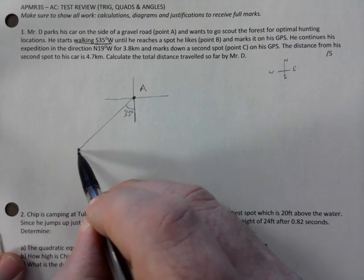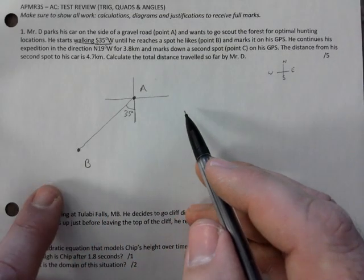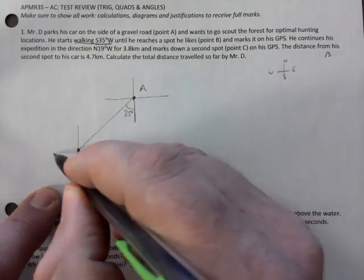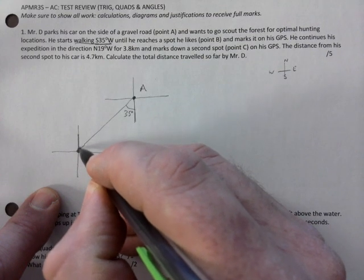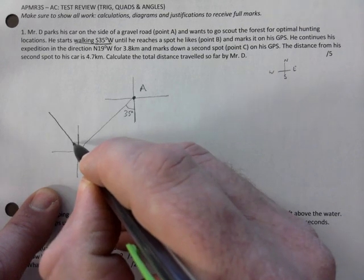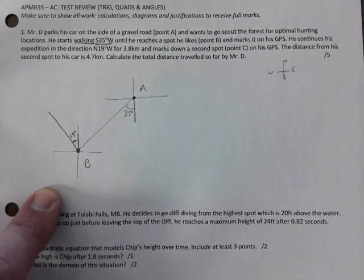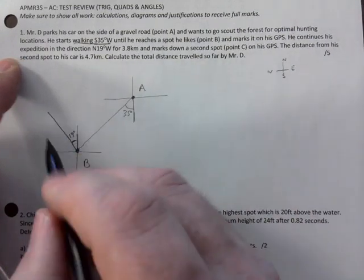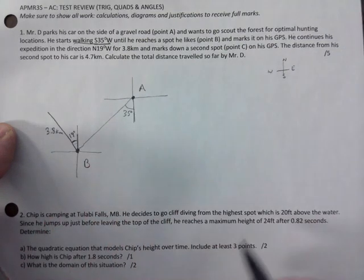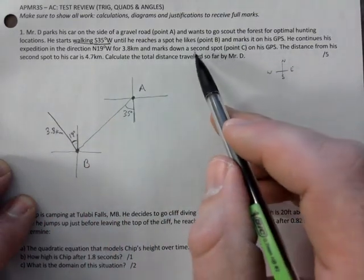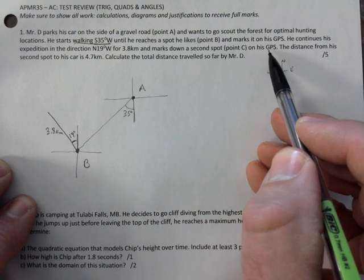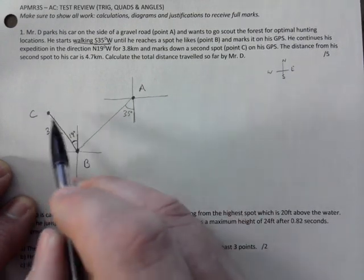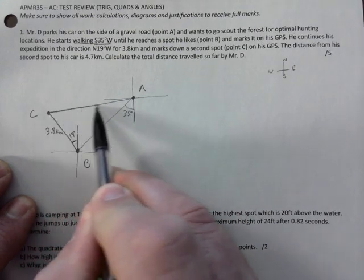Until it reaches a spot he likes, which is point B, and marks it on the GPS, continues on its expedition north 19 degrees west. So from here, we're going to start north and then turn 19 degrees west. So the 19 is actually inside the triangle we're building. For 3.8 kilometers. So we know that this is 3.8 kilometers here.